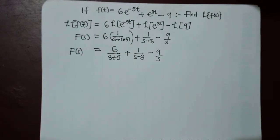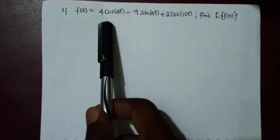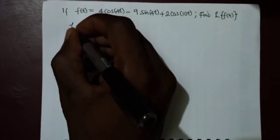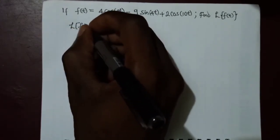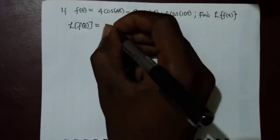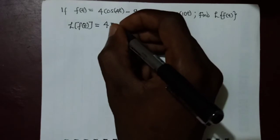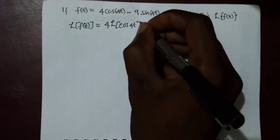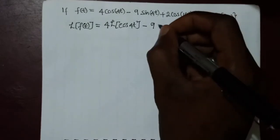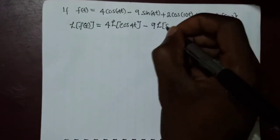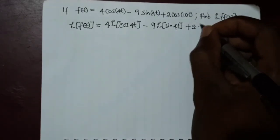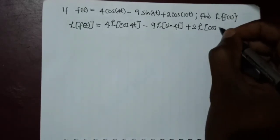Now for the second problem: given f(t) = 4cos(4t) − 9sin(4t) + 2cos(10t), find the Laplace transform. The Laplace transform of f(t) is found by factoring 4 out and taking L{cos(4t)}, minus 9 times L{sin(4t)}, plus 2 times L{cos(10t)}.